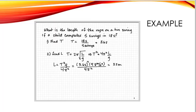And this is a little equation example of finding period in a pendulum. And the problem is, what is the length of rope on a tire swing if a child completes five swings in 18 seconds? So the first thing we need to do is find out what the period is in seconds. So we know that it takes 18 seconds to do five swings. And so you divide that by five, and you get 3.6 seconds for each complete swing.